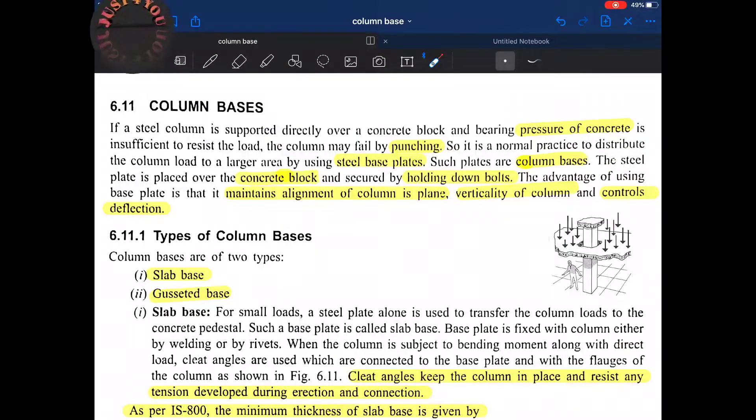Since we are specifically dealing in steel structures, we cannot put a steel column directly over a concrete base because if we do so, the column may fail by punching. And why so? Because the bearing pressure of concrete is insufficient to resist the load.